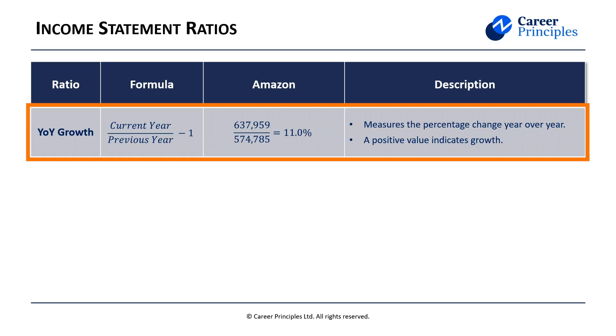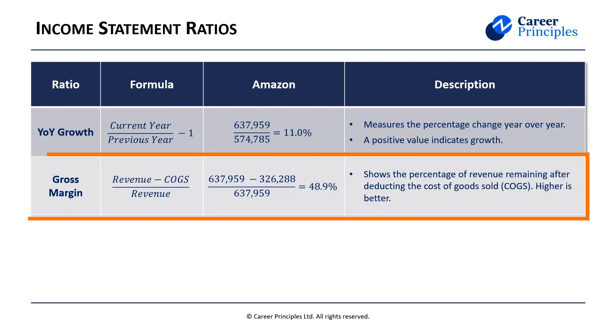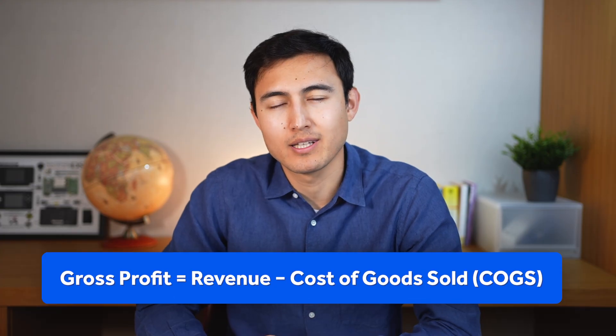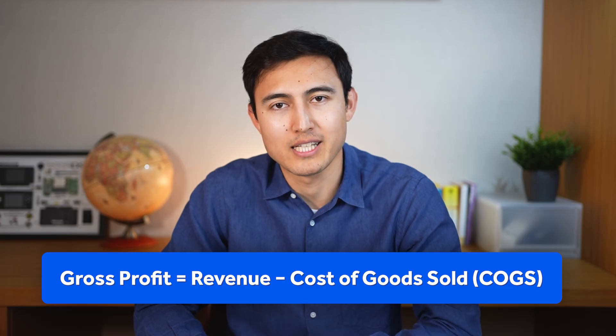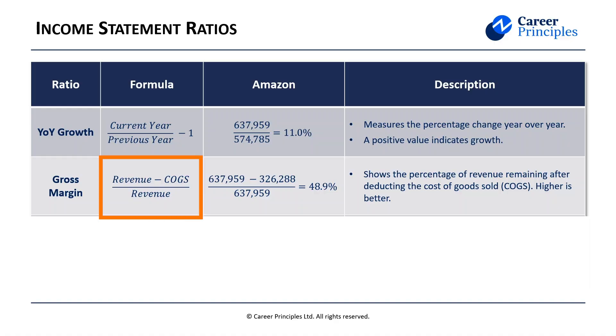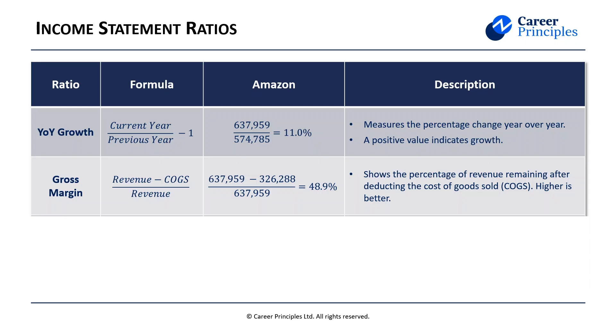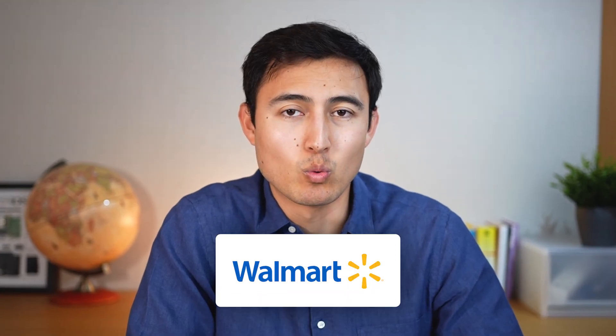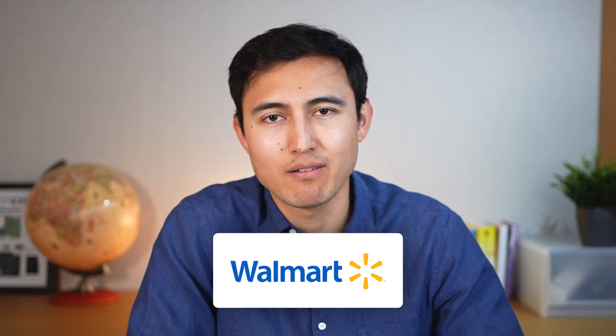Beyond year-over-year growth, the next ratio is the gross margin ratio, also known as the gross profit ratio. Gross profit is simply revenue minus cost of goods sold, divided by revenue. In Amazon's case it's around 49%, meaning they retain 49 cents after covering cost of sales for every dollar in revenue. This might seem low, but for retailers it's high — Walmart's gross margin is around 25%. Amazon's is higher because of service-side businesses like Amazon Web Services and Prime Video.